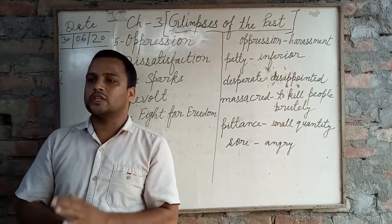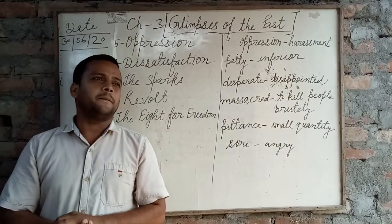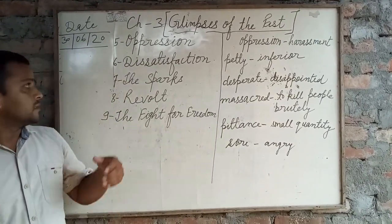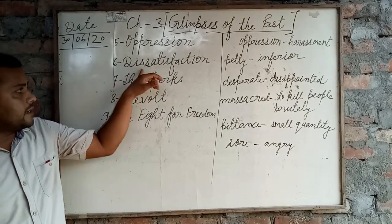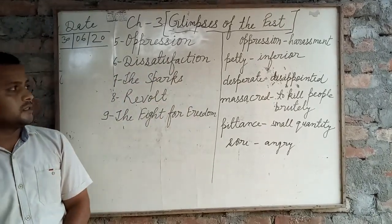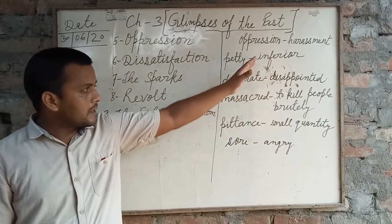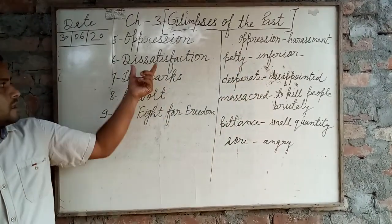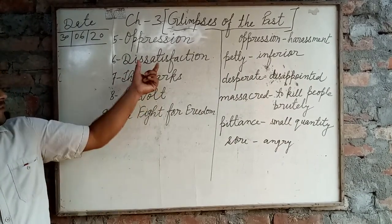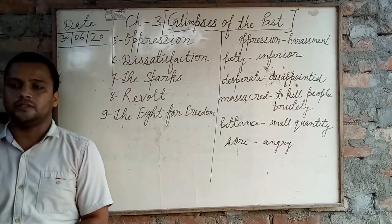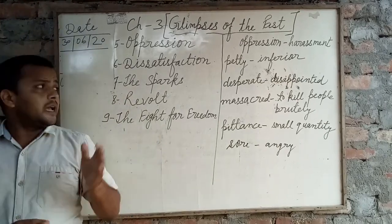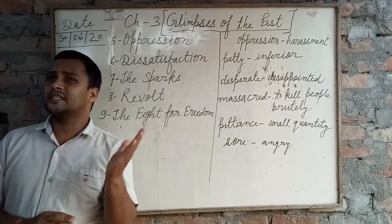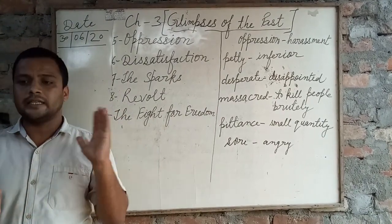The British began to prosper while the Indian industries began to die day by day. Now see the next point — Dissatisfaction. The meaning of the difficult words is written here. See the next point at page number 41, Dissatisfaction.